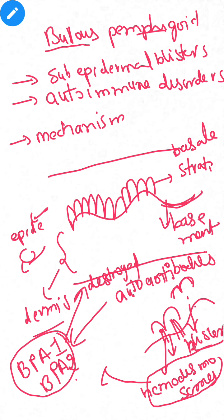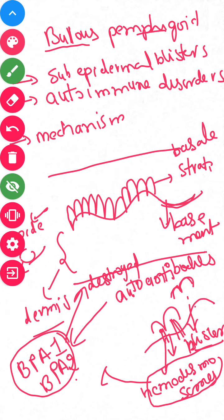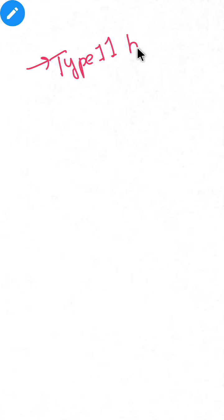As mentioned, bullous pemphigoid is an autoimmune disorder, and it is an example of a type 2 hypersensitivity reaction.